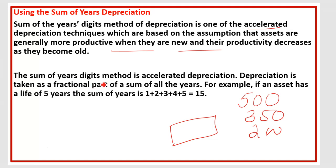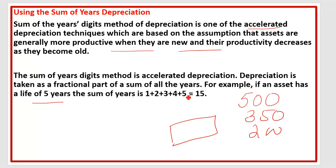In the sum of years digits method, depreciation is taken as a fraction of the sum of the years. This means if the useful life of machinery is 5 years, you add up the years: 1, 2, 3, 4, 5.